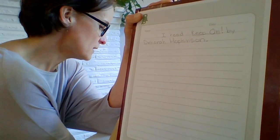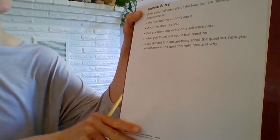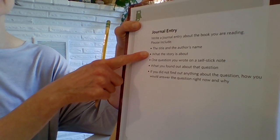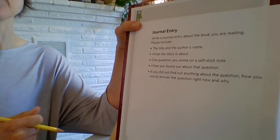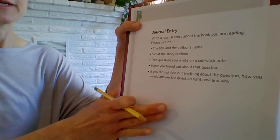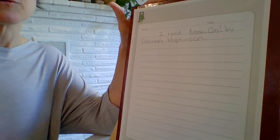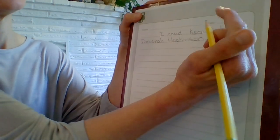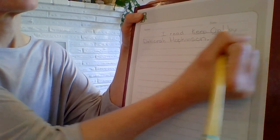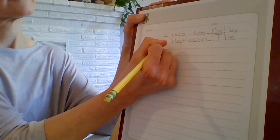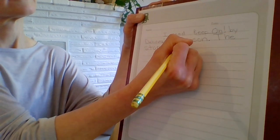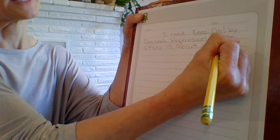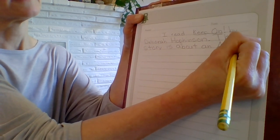The second instruction tells me I need to include what the story is about. So I'm going to think about what are the important parts to tell from Keep On. The first thing I want to say is the story is about an Arctic explorer named Matthew Henson. I'm going to use a capital A as I write Arctic, since it's a proper noun.